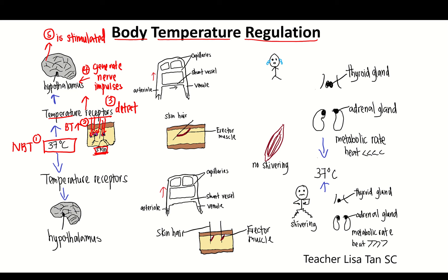Normal body temperature is 37 degrees Celsius. Number two, when you do vigorous exercise, the body temperature increases. Number three, temperature receptor detects the change in body temperature. Number four, temperature receptor generates nerve impulses and sends them to the hypothalamus by neurons. So once the nerve impulses reach the hypothalamus, hypothalamus is stimulated.